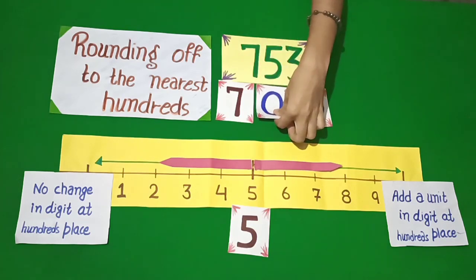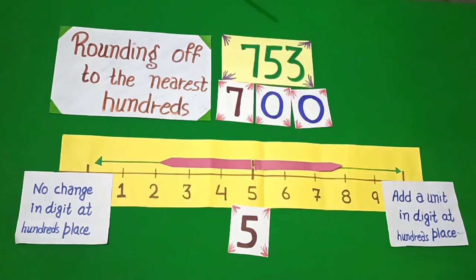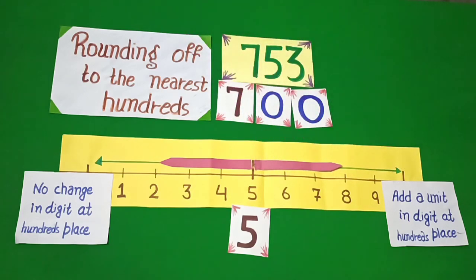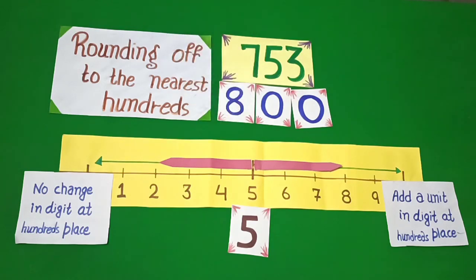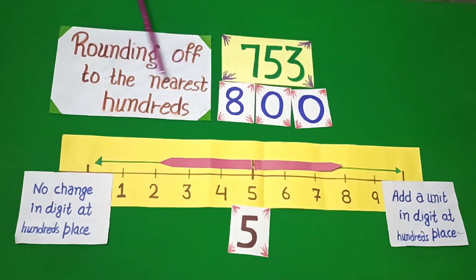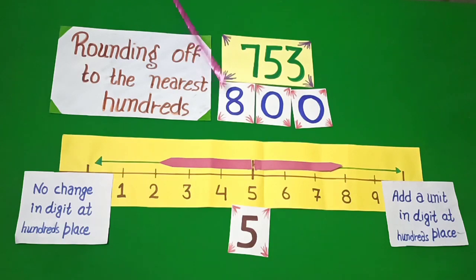See then the 10th digit — 5 to 9, add a unit to the digit at the 100th place. So dear students, number 753 rounded off to the nearest 100s is 800.